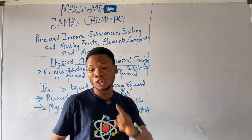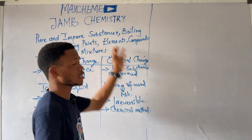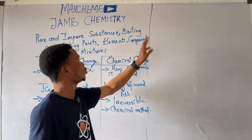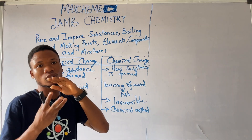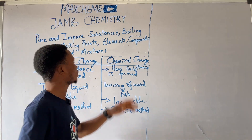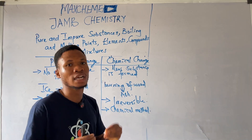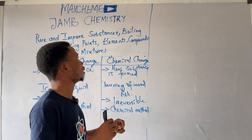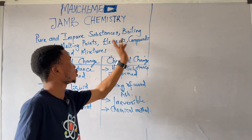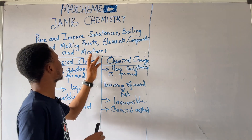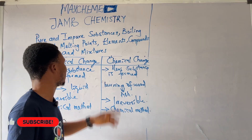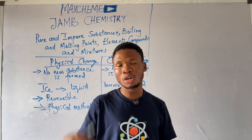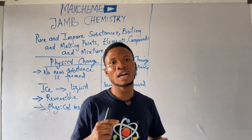Pure substances are substances that have just one particle in them, while impure substances have two or more particles in them. Boiling point is the temperature at which liquid will change to gas, and melting point is the temperature at which solid will turn to liquid. An element is a substance that cannot be split into simpler units by ordinary chemical process, while a compound can be split by ordinary chemical process and contains two or more elements. Mixtures contain two or more constituents and can be separated by physical means. If you have any questions, drop them in the comment section. Make sure you like this video and subscribe to our channel. Thank you.